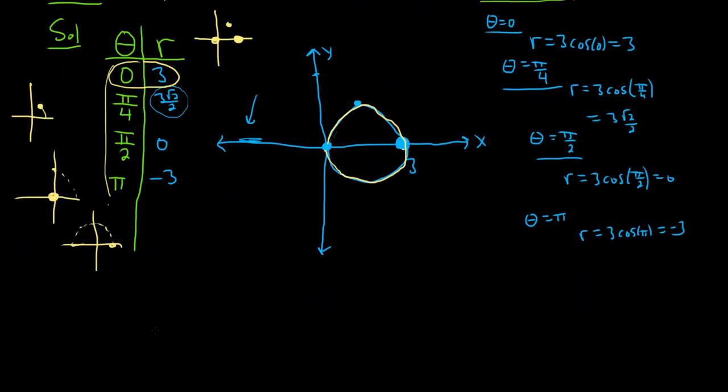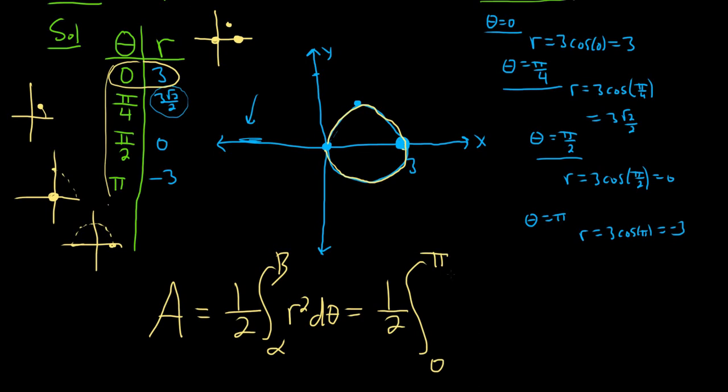So this gives us our limits of integration. Recall the formula is equal to one-half alpha to beta, R squared d theta. So it's one-half, and then we're going from 0 to pi,